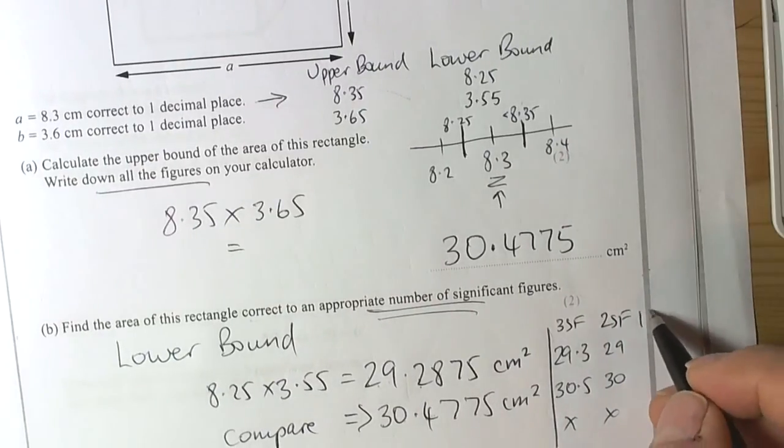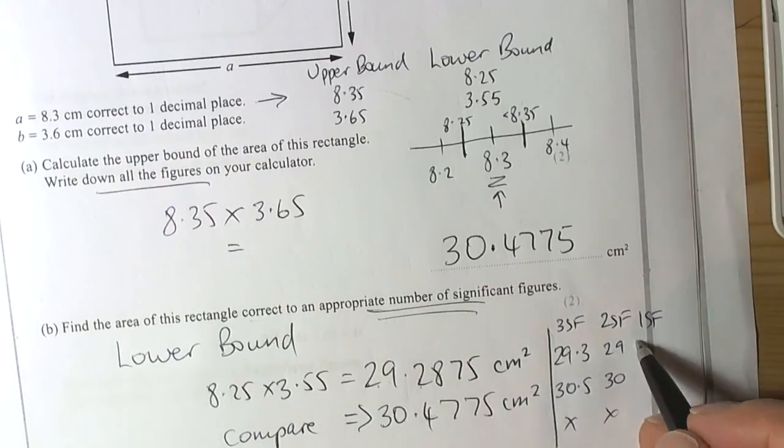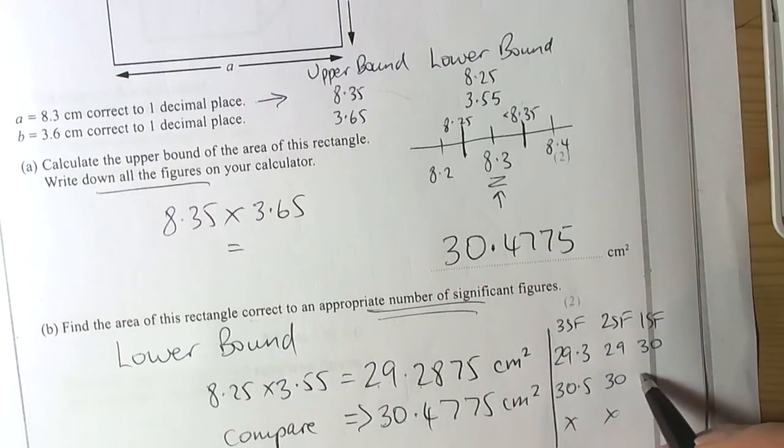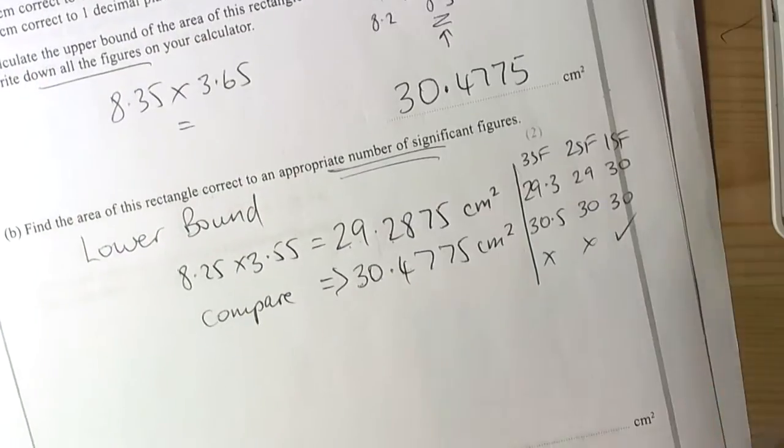So basically we come back to one significant figure. And this number here to one significant figure, well the first non-zero digit is the 2, so the tens column. So this to the nearest ten would be 30. And this is in the tens column as well, so the nearest number would be 30 again. So to one significant figure, they both give an answer of 30.